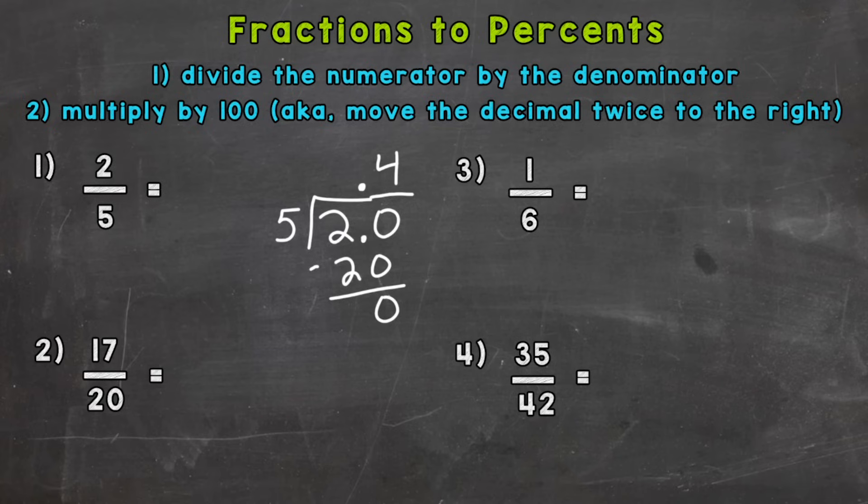Now we need to multiply by 100, and we can do that by moving the decimal twice to the right. And the reason we multiply by 100 is because percent actually means per 100. So multiplying that answer gives us that per 100, which is the percent.